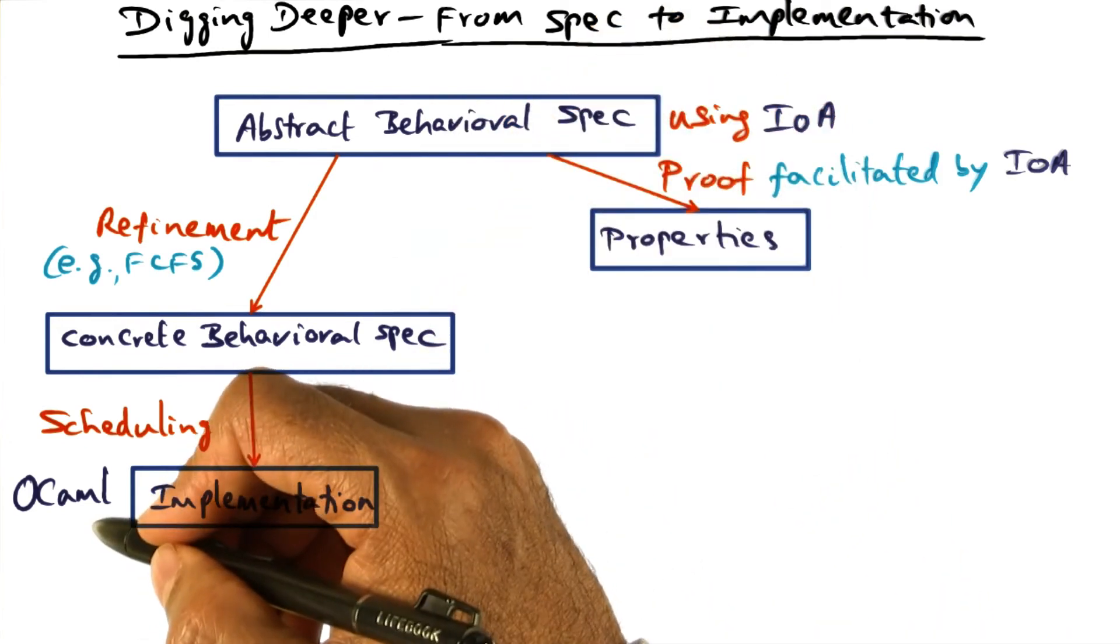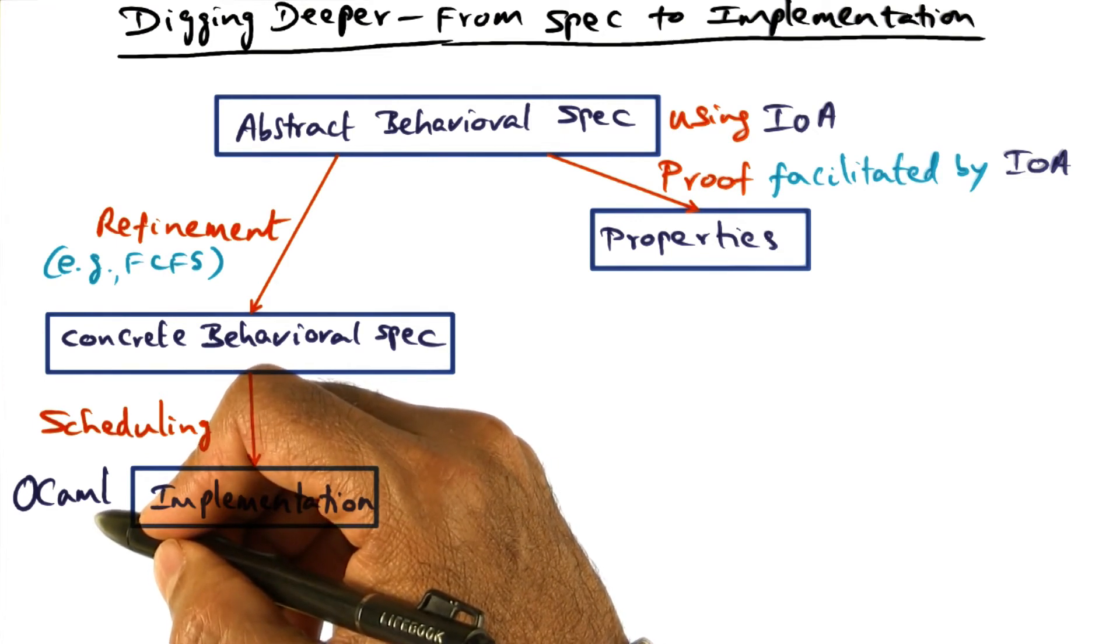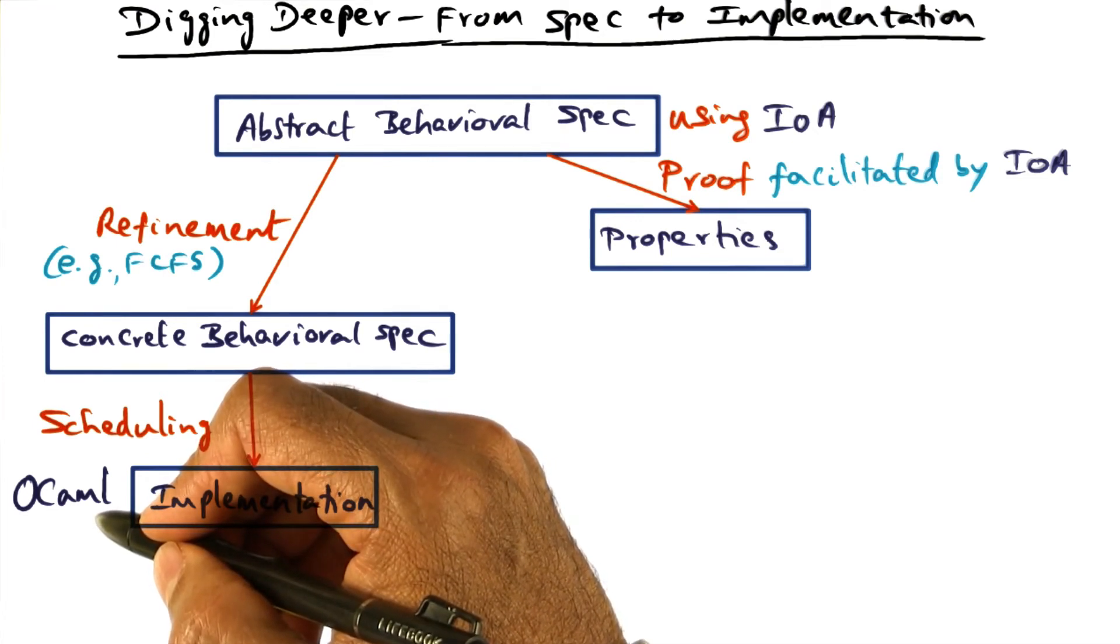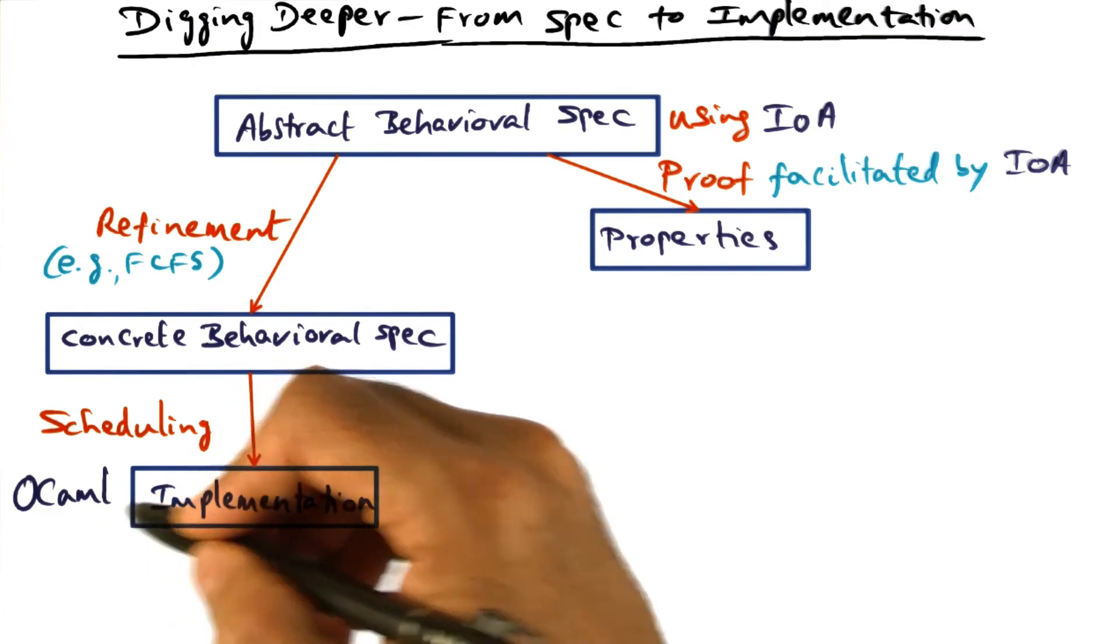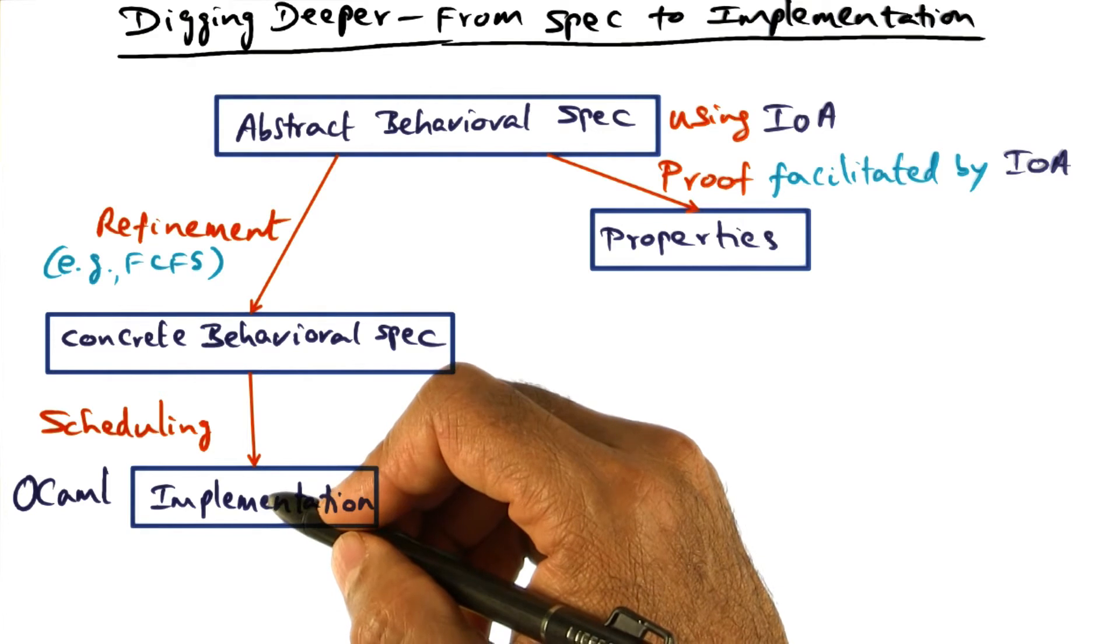I already mentioned some of the reasons why they chose OCaml as the implementation vehicle: functional programming language, formal semantics, and it also leads to compact code with high level operations and data structures.